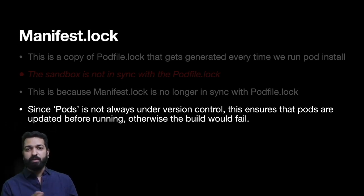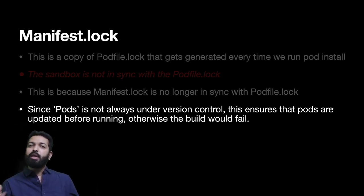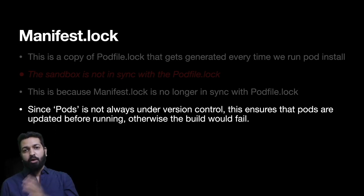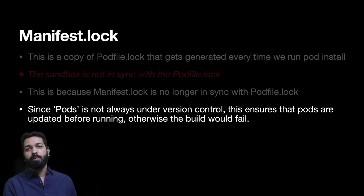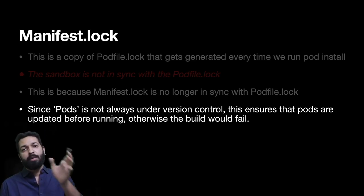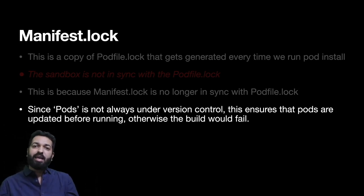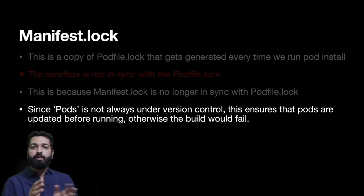Imagine you updated a pod, the lock file was also updated, you pushed the code, and your teammate takes the pull and also gets the updated Podfile.lock. Without running pod install he tries to run the project — the build will fail because of Manifest.lock. The Manifest.lock on his machine is not in sync with the updated Podfile.lock, meaning he has different versions of pods than what is mentioned in Podfile.lock. That is the role of Manifest.lock.